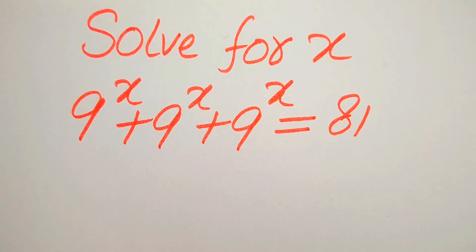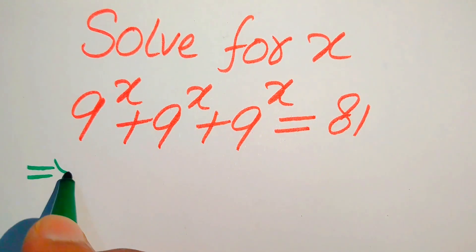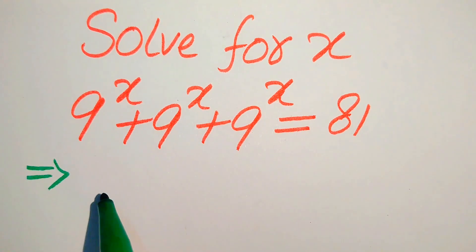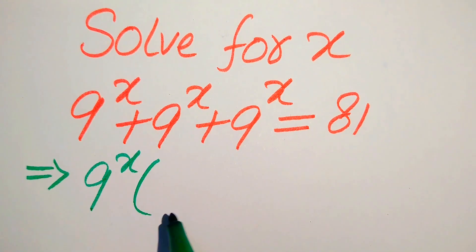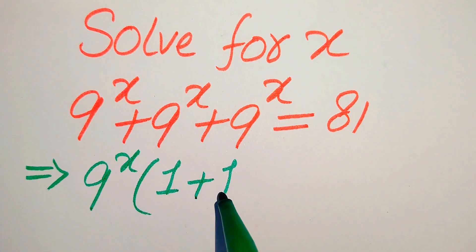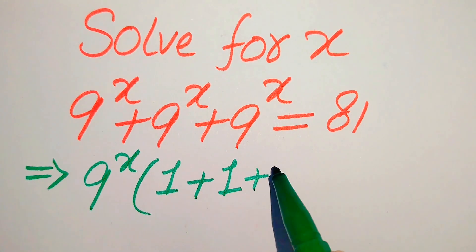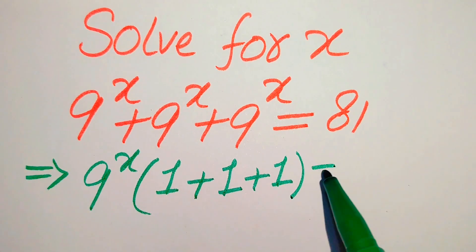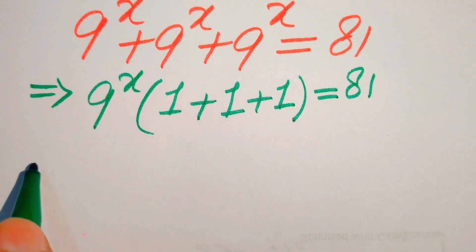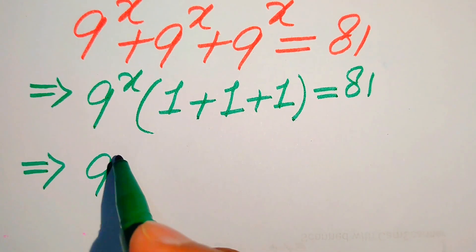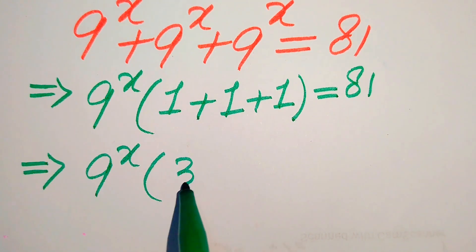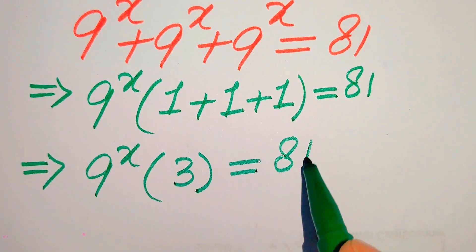The very first thing we are going to do is notice that 9 to the power of x is involved in each of these terms, so we will take 9 to the power of x as a common factor. After taking this common factor we get 9 to the power of x times 1 plus 1 plus 1, which equals 81. Simplifying, that becomes 9 to the power of x times 3 equals 81.